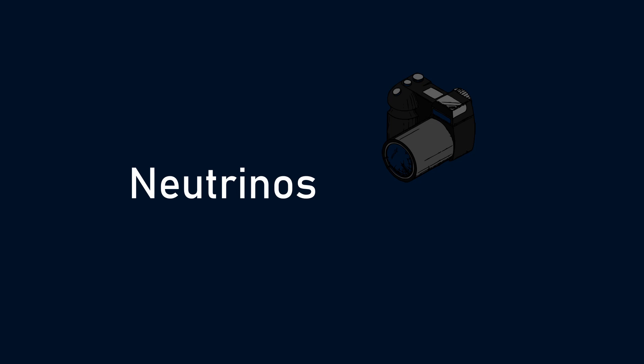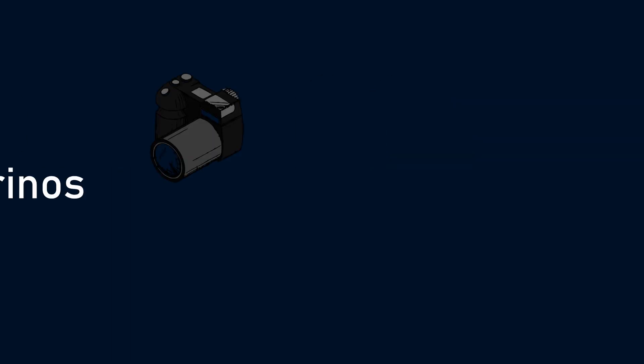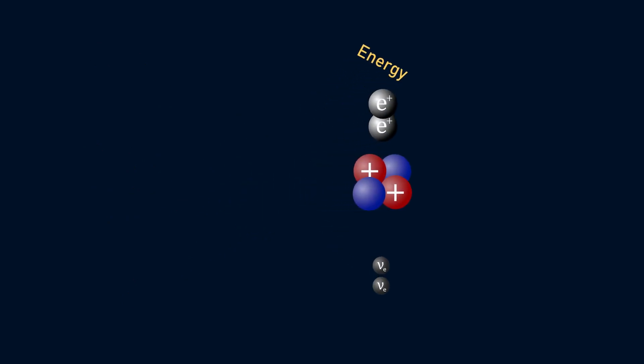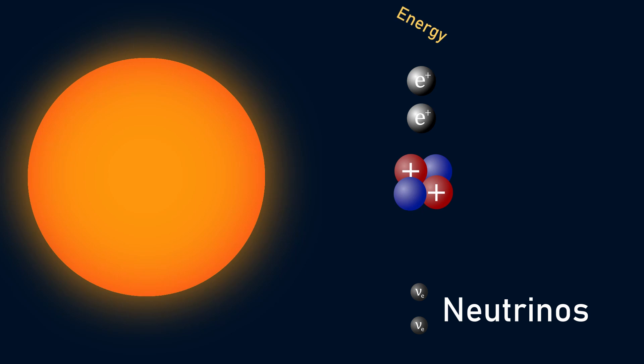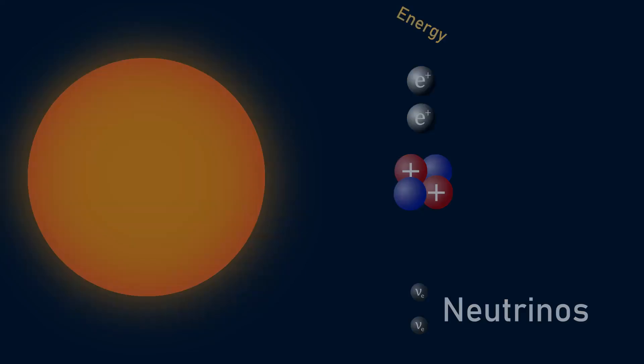Neutrinos are small particles produced in many ways, such as in the fusion of hydrogen to form helium, which is the main mechanism our Sun uses to produce energy. For many years, we weren't even aware of their existence, and for good reason. Neutrinos are notoriously hard to detect.